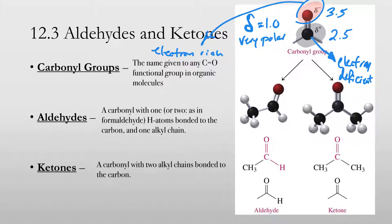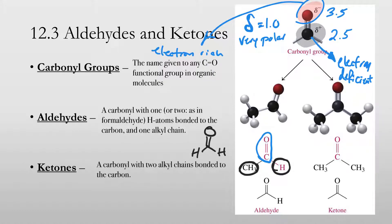Aldehydes have the carbonyl group at the end of the chain. They all have an alkyl chain and a hydrogen atom attached to that carbonyl — except for formaldehyde, which has two hydrogen groups attached to it. All the rest of the aldehydes are going to have one hydrogen and then an alkyl chain.